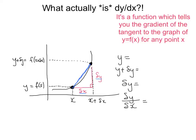Now you might be thinking: that's no good — I didn't want the gradient of the blue chord line, I wanted the gradient of the curve. The gradient of the curve is more like the green tangent line, and that has a completely different gradient to the blue chord, which is what I was after.